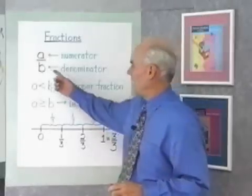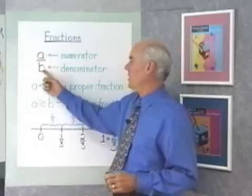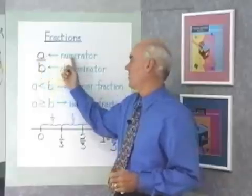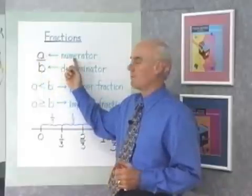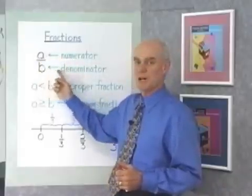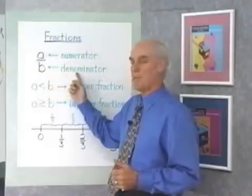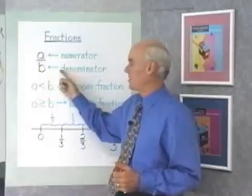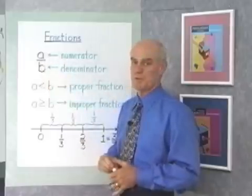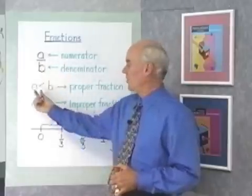I've written the fraction A over B. The number on top, A, is called the numerator of the fraction. The number B that's on the bottom is called the denominator of the fraction. Both A and B are called terms of the fraction.